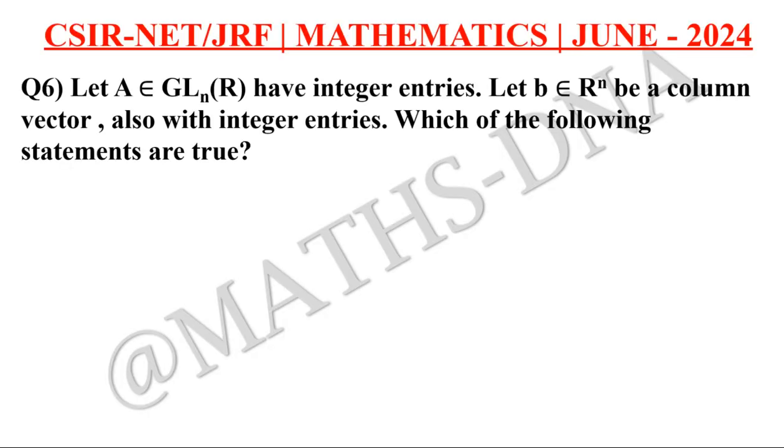Now, moving on to the question, the question is, let A belongs to GL_n(R), that is group of linear matrices of n cross n order, having and which are invertible, having integer entries, the best part is that the entries are integer over here.